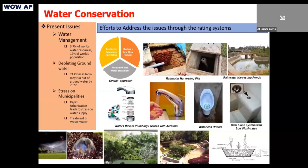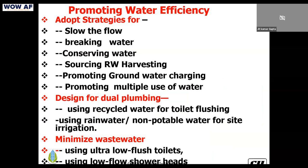Phytoremediation is another approach — a constructed wetland treatment where you don't need a conventional STP plant. Plants alone degrade all your organic matter and you get fresh water out. It may not be possible everywhere in the city, but in housing societies it could be made applicable and would do a great job.